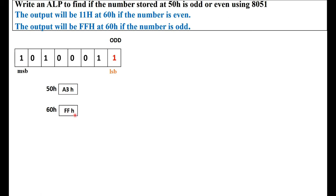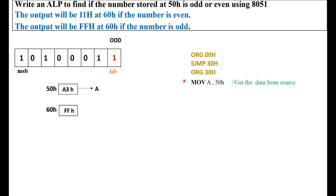Let us write the 8051 program for this. We begin by writing the first three lines of code: ORG 00H, SJMP 30H, and ORG 30H, to skip the first 30 bytes of memory where the interrupt vector table is located. The first task is to take the given number stored at 50H into the accumulator using direct addressing. The instruction which does this is MOV A, 50H — copy the contents from memory location 50H into the accumulator. When we do not put a hash symbol, the number is treated as an address and the data at that address is fetched into the accumulator.